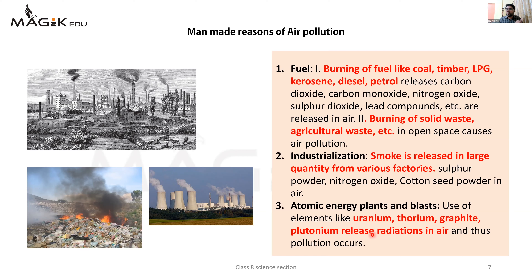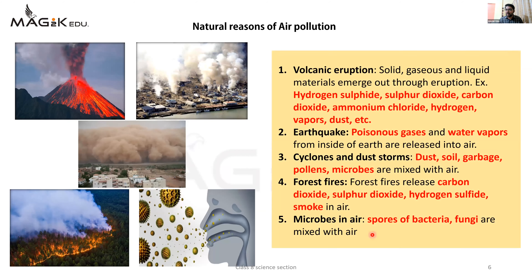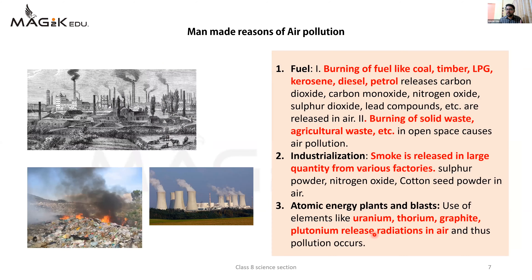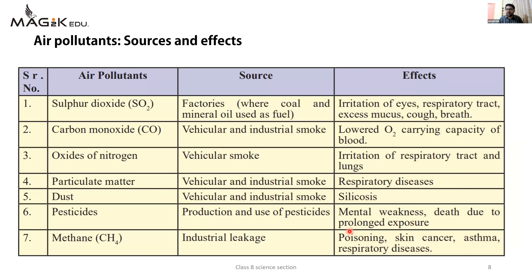So humne dekha - natural reasons mein volcanic eruption aata hai, cyclones and dust storms aate hain - yeh do main reasons hain. Iske alawa humne earthquake, forest fire, aur microbes in air ke baare mein bhi sikha. Man-made reasons mein fuel burning, industrialization, atomic energy plants and blasts hain. Ab is air pollution ke sources aur effects aur achhe se bataate hain - yeh jo table aapke saamne dikha raha hai, yeh bahut hi easy table hai.